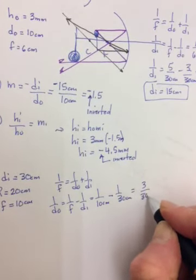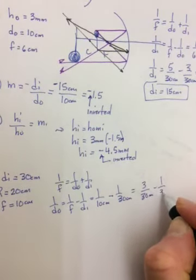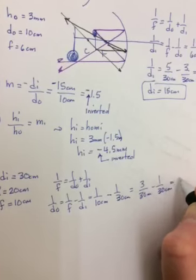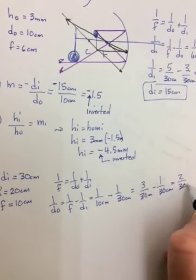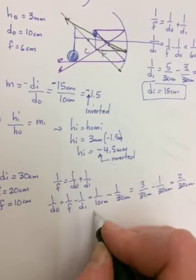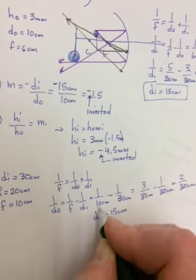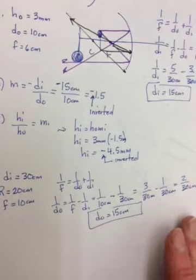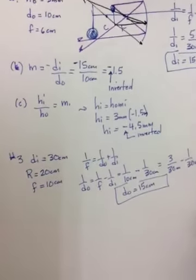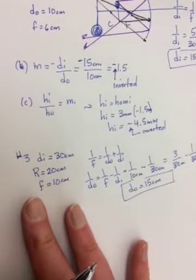Wait, we had this number before. So do is equal to 15 centimeters. And yes, I think it's just a coincidence that it worked out that way because of the numbers. It will not always be the same.